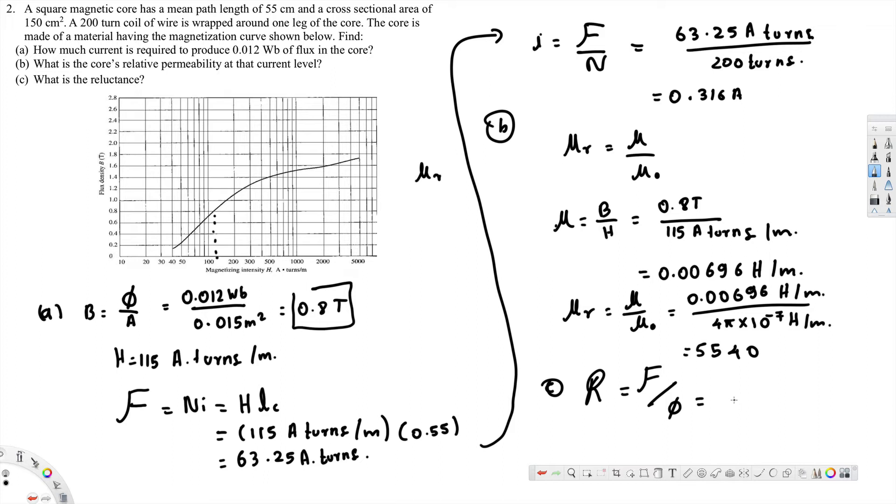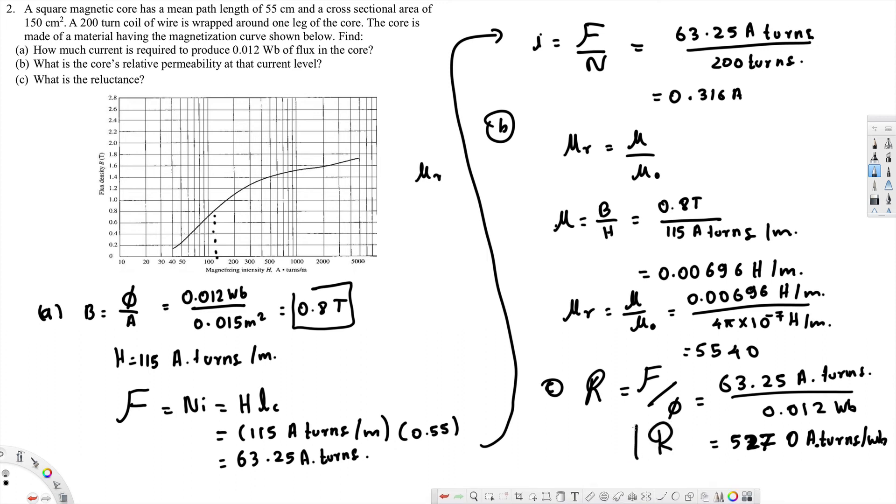The magnetomotive force we just calculated is 63.25 ampere turns, and phi is given, that is 0.012 weber. That gives us 5270 ampere turns per weber. And that's the reluctance.